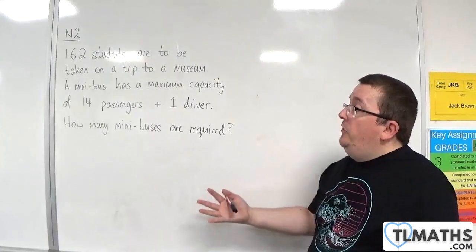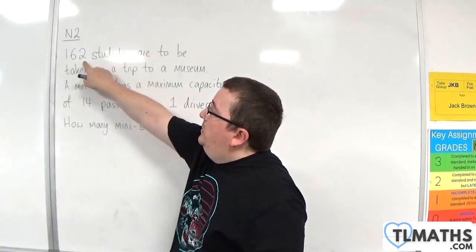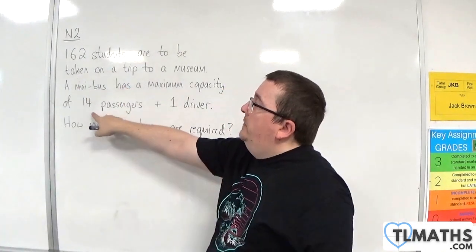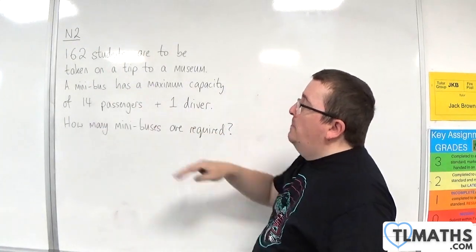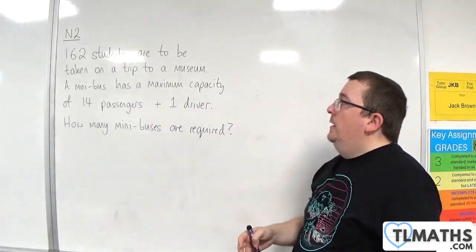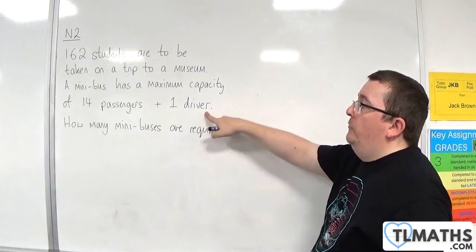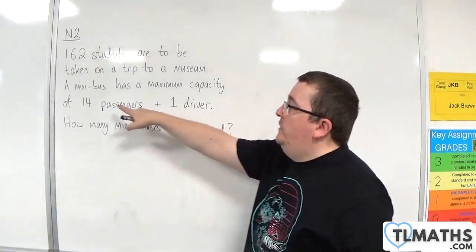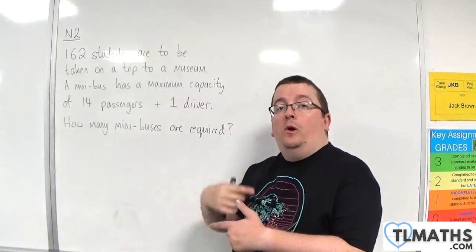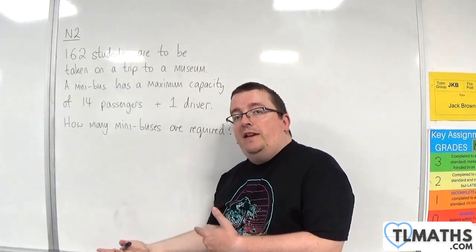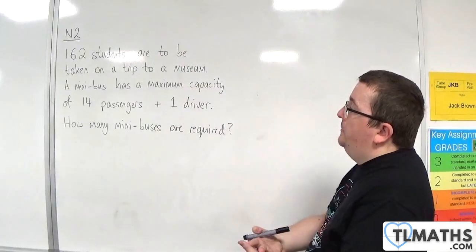So what we need to do is divide 162 by 14. That will tell me how many minibuses I need. I don't need to worry about the driver because the driver is added on to each minibus. So once I know how many minibuses I need, I know how many drivers I need.